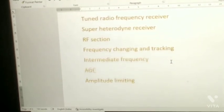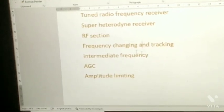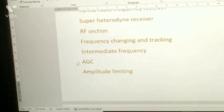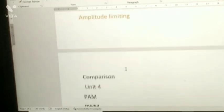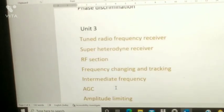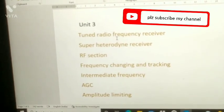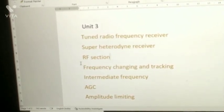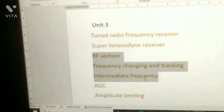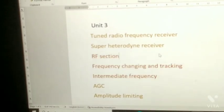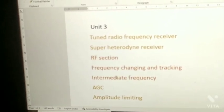In the superheterodyne receiver, also prepare Intermediate Frequency (IF). Next, AGC (Automatic Gain Control). Next, amplitude limiting. Note: they may ask numerical questions from the RF and Intermediate Frequency sections, so please prepare numericals as well — they may ask theory or numerical questions.